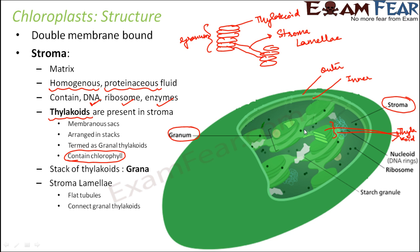Looking at the diagram, you can see stromalamellae connecting one granum to another. Almost 40 to 100 grana can occur in a single chloroplast. The arrangement of lipids, enzymes, and pigment components is so precise that without this precise arrangement, photosynthesis cannot happen. Everything has to be present in the right quantity everywhere for the process of photosynthesis to take place.